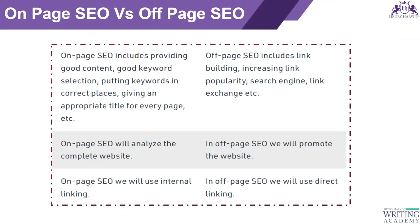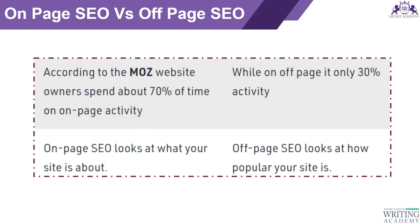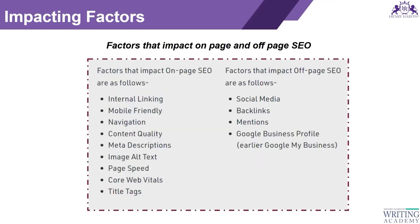Here are the differences between on-page SEO and off-page SEO. On-page SEO includes all your content, keyword selection, everything that directly impacts the ranking of your website. Off-page SEO includes your link building, referrals, link popularity, and link exchanges - this also helps in the ranking of the website. Off-page activity is just 30 percent while the major work for website ranking is done by on-page SEO which is 70 percent. On-page SEO looks at what your site is about and off-page SEO looks at how popular your site is getting.